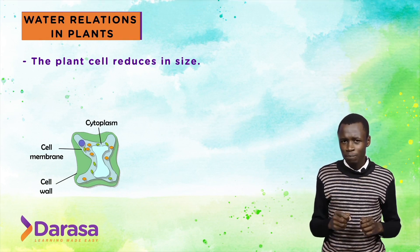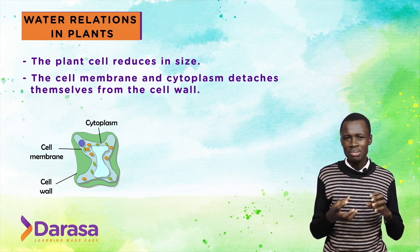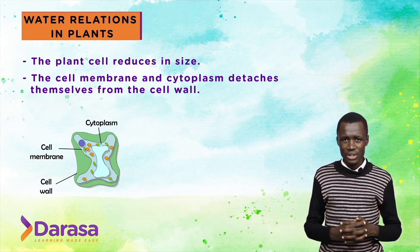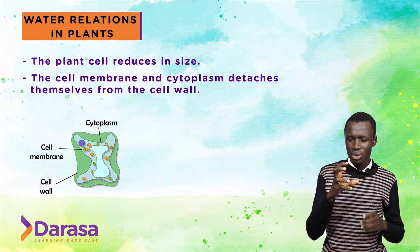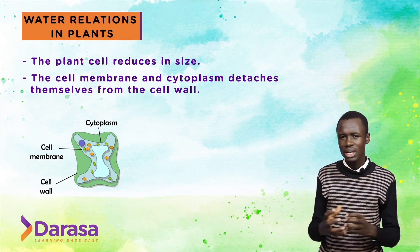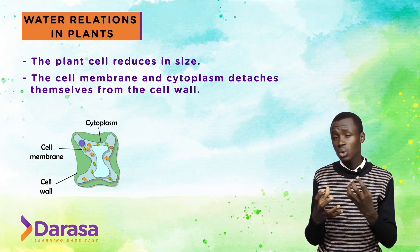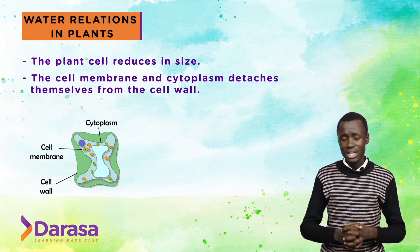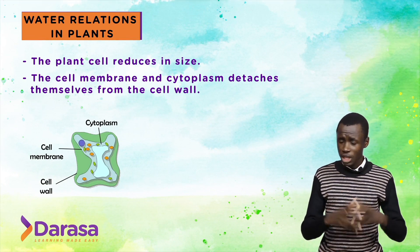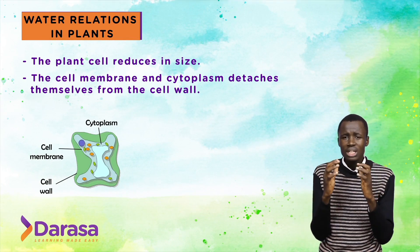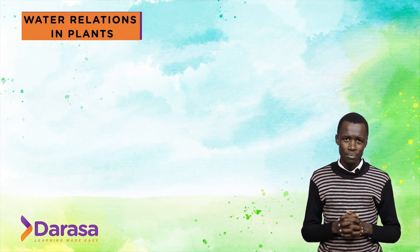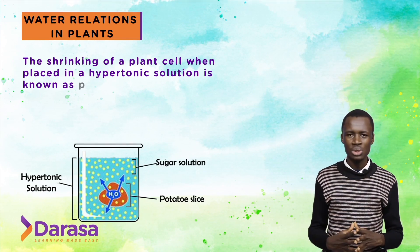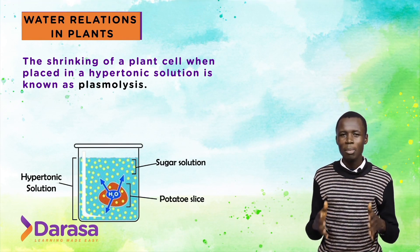As the cell shrinks, the cell membrane together with the cytoplasm detaches from the cell wall. Within the cell membrane you have the tonoplast, which houses the cytoplasm. The cell membrane detaches itself from the cell wall, bringing about the shrinking of the plant cell. This shrinking of a plant cell when placed in a hypertonic solution is called plasmolysis.